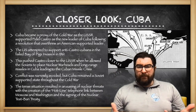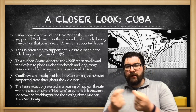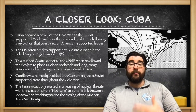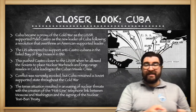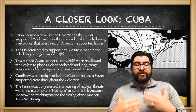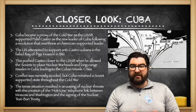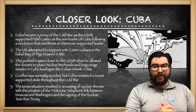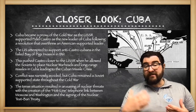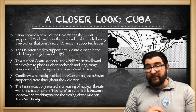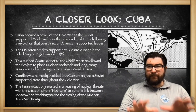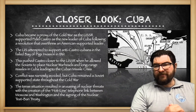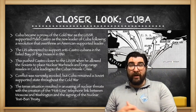In the Western Hemisphere, Cuba became a proxy of the Cold War as the Soviet Union supported a communist government under Fidel Castro, following a revolution where Castro overthrew an American-supported leader. The Americans attempted to oust Castro in the Bay of Pigs invasion in 1961. This failed and pushed Castro toward the Soviet Union for security, which allowed the USSR to place nuclear warheads and long-range missiles in Cuba — leading to the 1962 Cuban Missile Crisis. Cuba would remain a Soviet-supported state throughout the Cold War, just 90 miles from the United States.